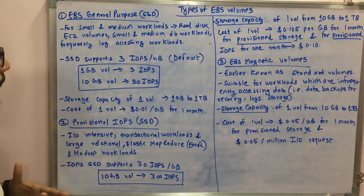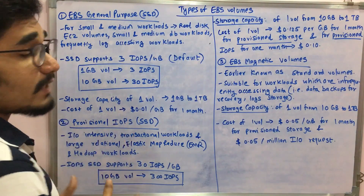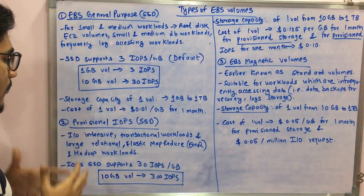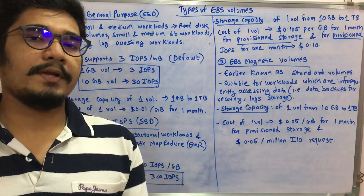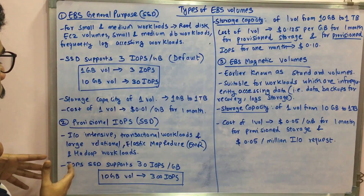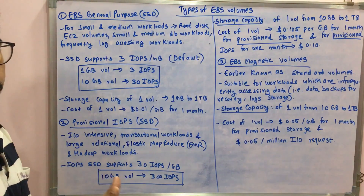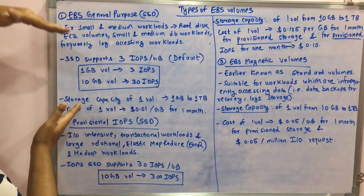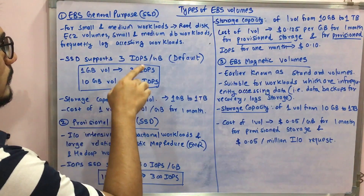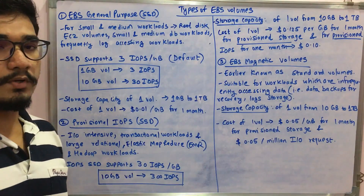Next, we have the Provisioned IOPS SSD. It's mainly used for I/O intensive applications, transactional workloads, and large relational and EMR (Elastic MapReduce) Hadoop workloads — so Apache framework-based big data applications. The IOPS for this SSD supports up to 30 IOPS per GB. So where a 10 GB volume gives 30 IOPS in General Purpose, here it gives 300 IOPS, since it's designed for high transactional requirements.